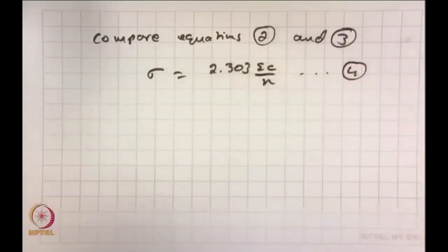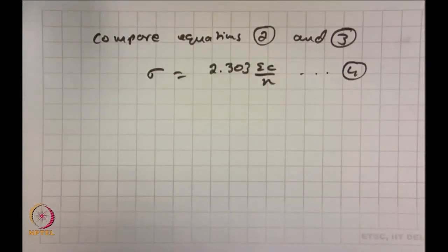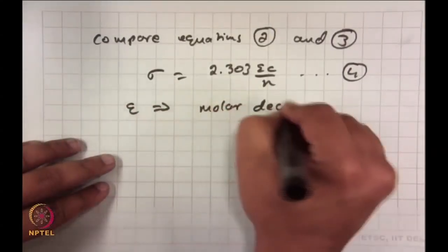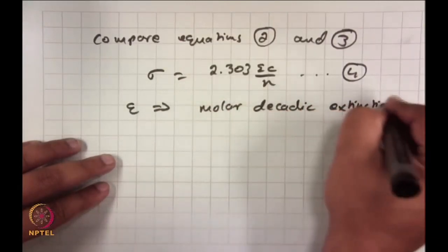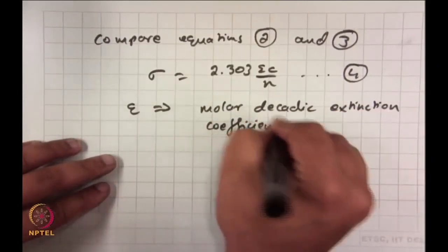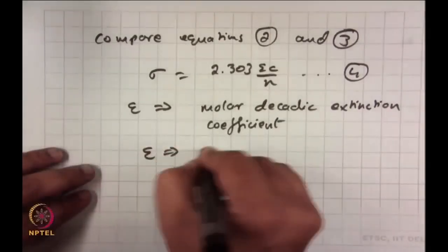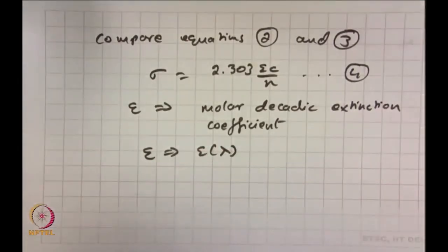Epsilon (ε) is referred to as the molar decadic extinction coefficient. Please remember: this ε is intrinsic to that respective molecule, and it also depends upon lambda — it is not the same for all wavelengths. ε is essentially a function of λ. Please keep that in mind.